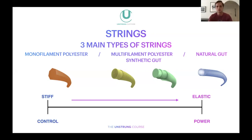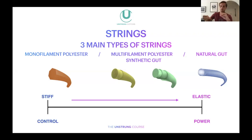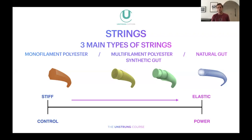We have our multifilament polyester string, which is hundreds or even thousands of little braided pieces — either nylon or polymers — woven and braided together, then coated in a polymer coating for better durability. In the same bracket, we have synthetic gut, whose main difference from multifilament is that it nearly always has a center core, made the same way as monofilament polyester, then braided with fibers on top and coated. That center core helps with tension hold and durability.